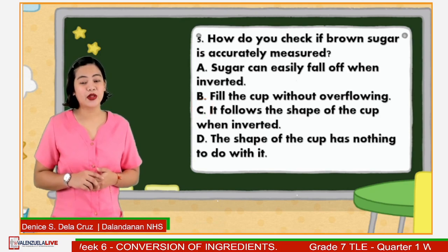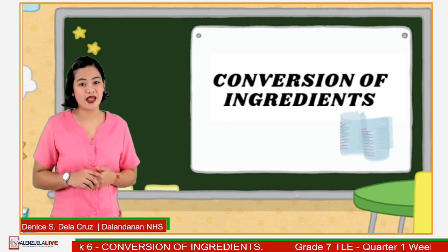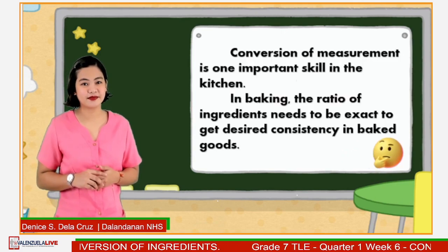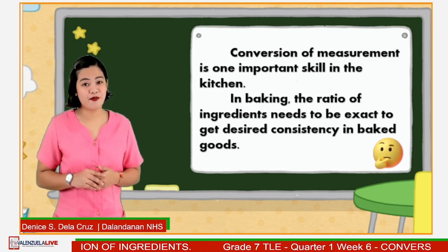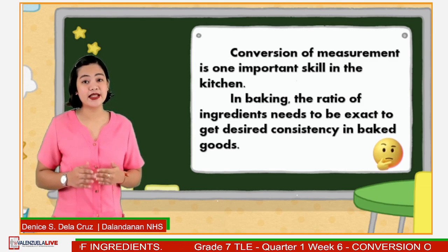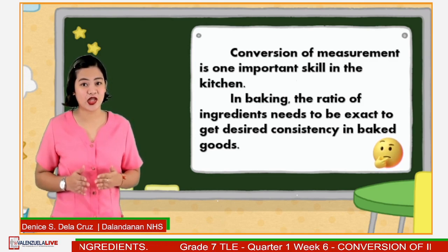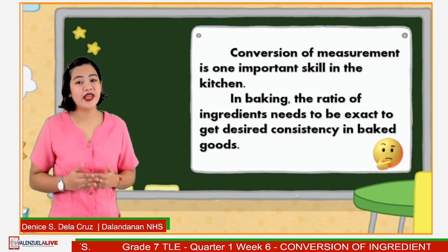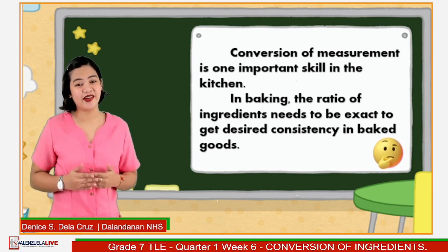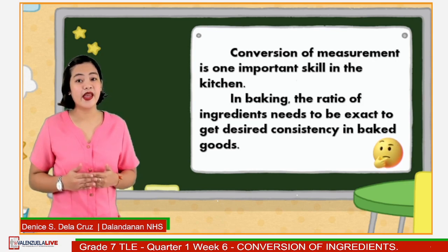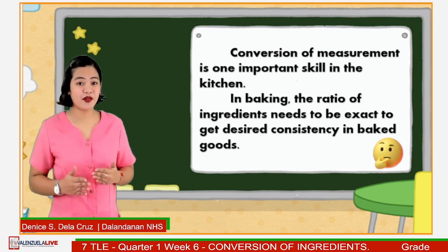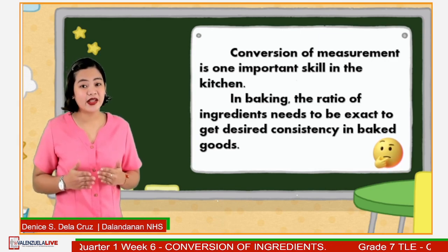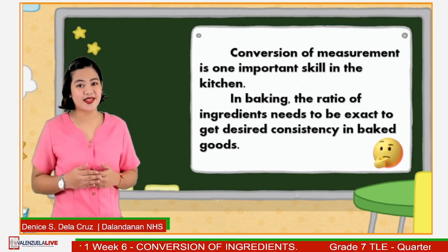For today, we will talk about conversion of ingredients. Conversion of measurement is one important skill in the kitchen. For us to get the best result in cooking, we need to measure ingredients accurately. In baking, the ratio of ingredients needs to be exact to get the desired consistency in baked goods.